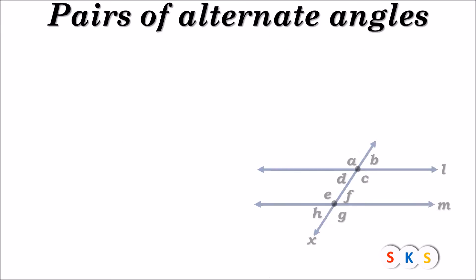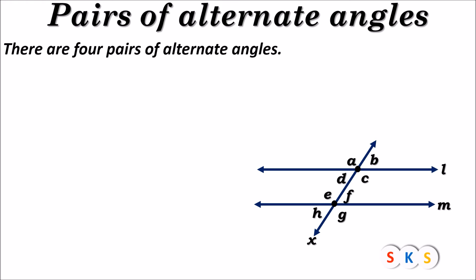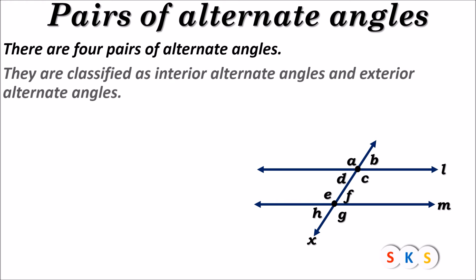Pairs of Alternate Angles. Here we have a figure. In this figure, line X is a transversal of lines L and M. There are four pairs of alternate angles. They are classified as interior alternate angles and exterior alternate angles, meaning there are two pairs of interior alternate angles and two pairs of exterior alternate angles.